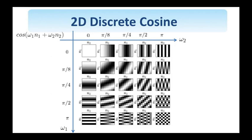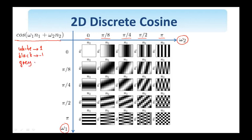Similarly, we show here the values of the two-dimensional cosine — cosine(omega 1 n1 + omega 2 n2) — for various values of omega 1 and omega 2: 0, pi over 8, pi over 4, pi over 2, and pi. Since pi is involved, the resulting cosine is periodic in the spatial domain. Instead of a 3D plot, we show it as a two-dimensional grayscale image where white corresponds to the value 1, black to minus 1, and gray to 0. The axes have a specific orientation and each block is an 8 by 8 block.